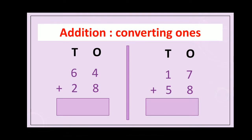Addition converting ones: 64 plus 28. Let's add ones: 4 plus 8 is equal to 12. 12 is equal to 1 ten and 2 ones, so we write 2 in the ones column and carry 1 forward to the tens. Now 1 plus 6 is equal to 7, and 7 plus 2 is equal to 9. We have 9 tens and 2 ones, that is 92. So 64 plus 28 is equal to 92.